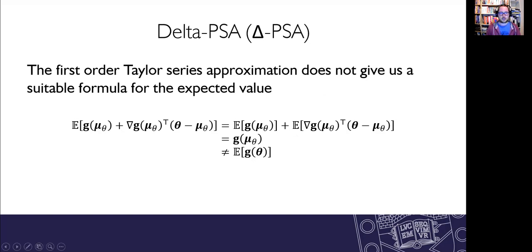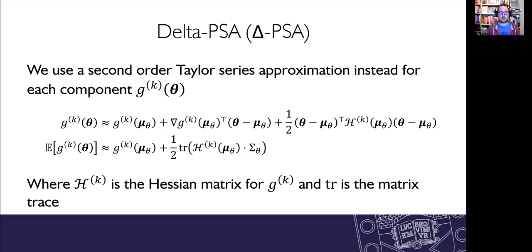If you're looking to get the expected value and you use the first order Taylor series approximation, it doesn't give you a suitable formula. It just says your expected value of your outcome is the same as applying your model with the expected value for the parameters. And we know that's not the case because of model nonlinearities. So we need to extend to a second order Taylor series approximation.